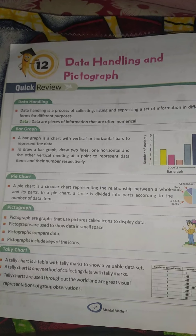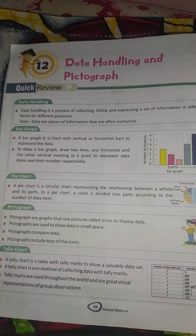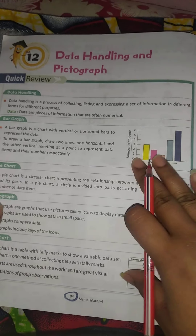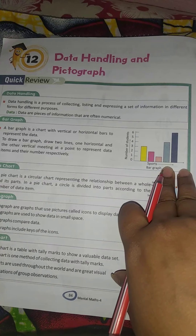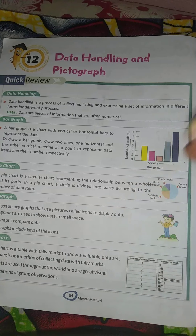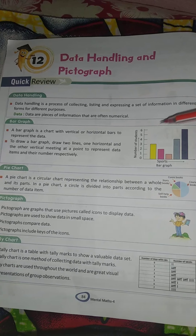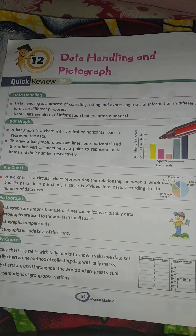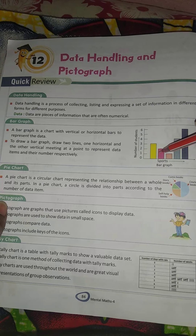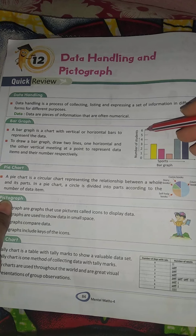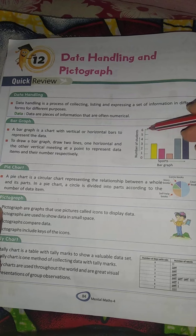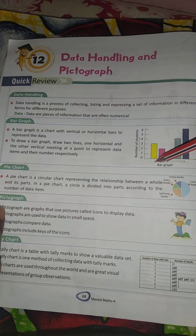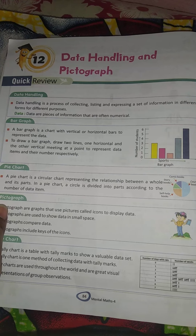First, what is a bar graph? This means we can show our data through a bar graph. There are two lines — one horizontal and one vertical. These two lines help us to represent our data.